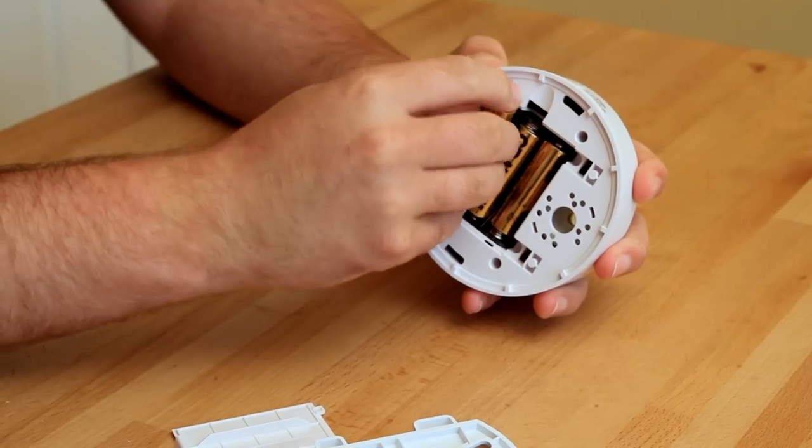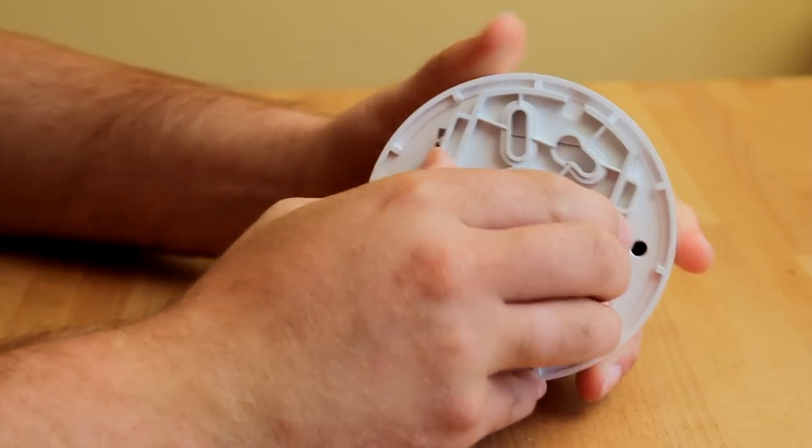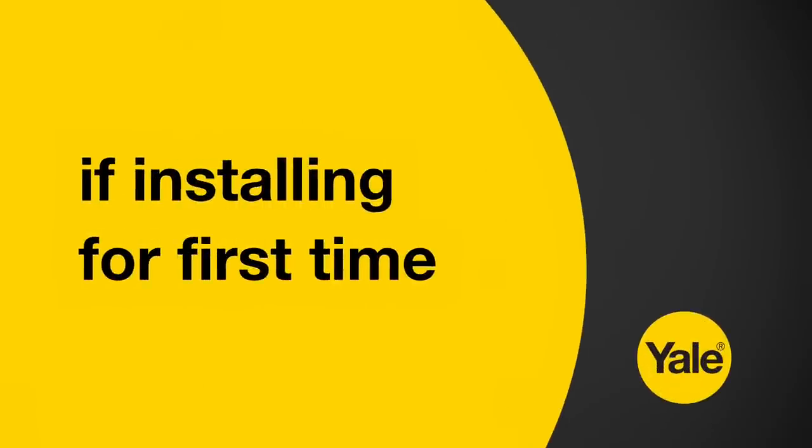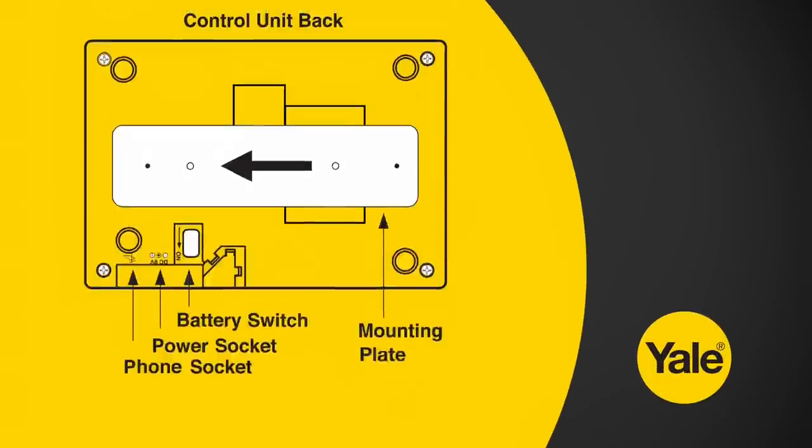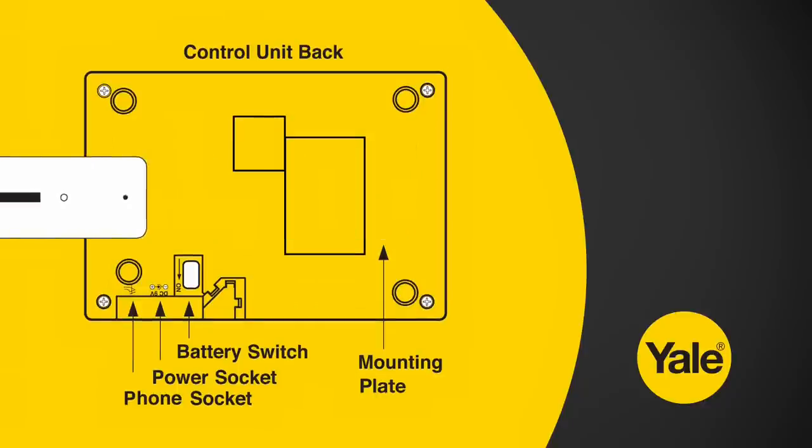Pull out the plastic tabs on all other components to activate their batteries. Components without plastic tabs require the correct batteries to be inserted. If you're installing the system for the first time, remove the mounting plate from the back of the control panel by sliding it across.